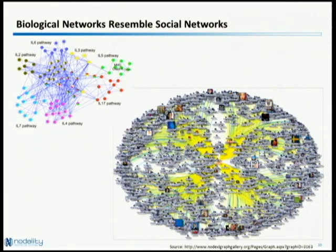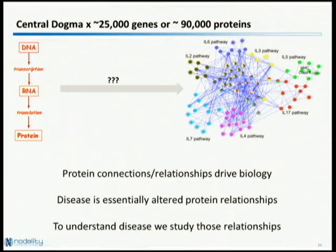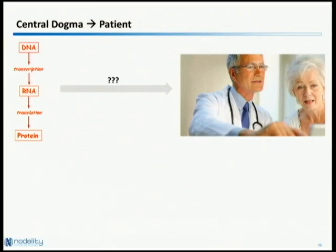These 90,000 proteins don't exist in isolation — they interact with each other, and these protein interaction networks interact with other networks. So we have networks interacting with networks and very high dimensionality in our data. These biological networks resemble social networks, and we use a lot of graph theory — algorithms developed for social network analysis are applicable to biological networks and vice versa. The connections between proteins define and drive biology, and disease can be thought of as altered protein relationships.